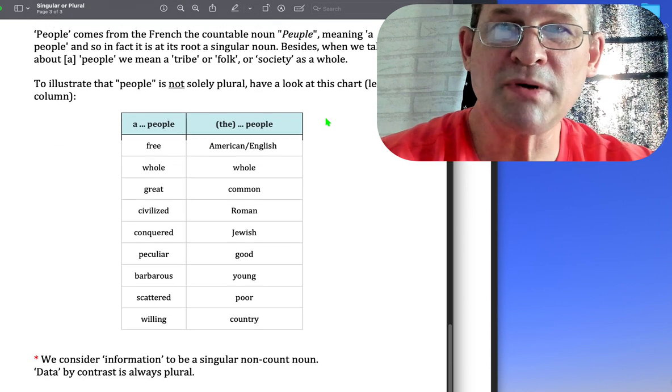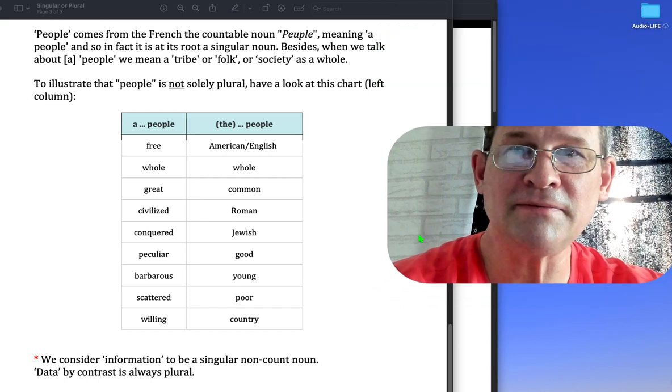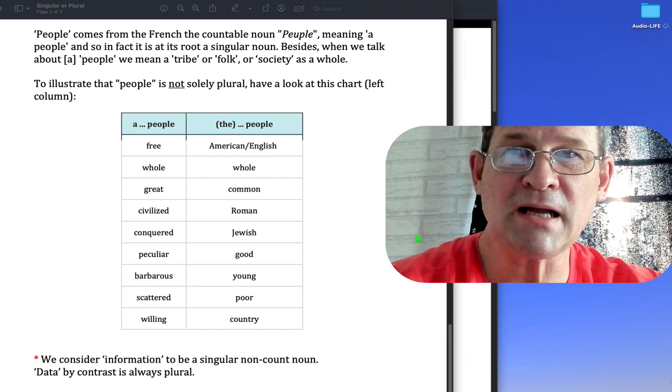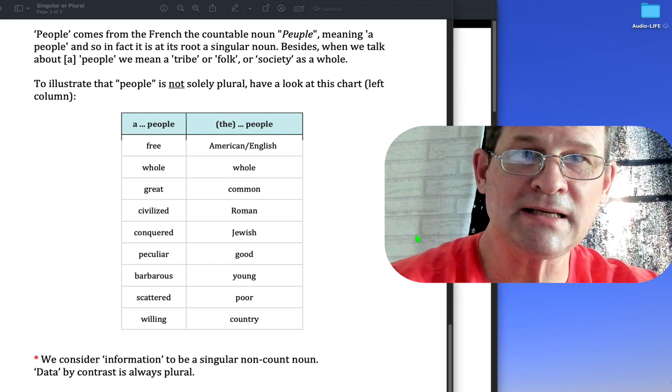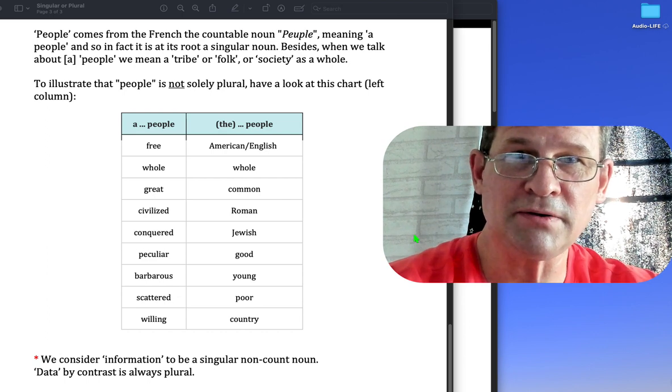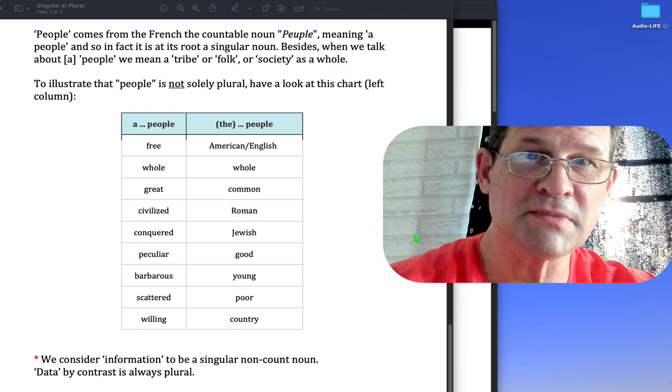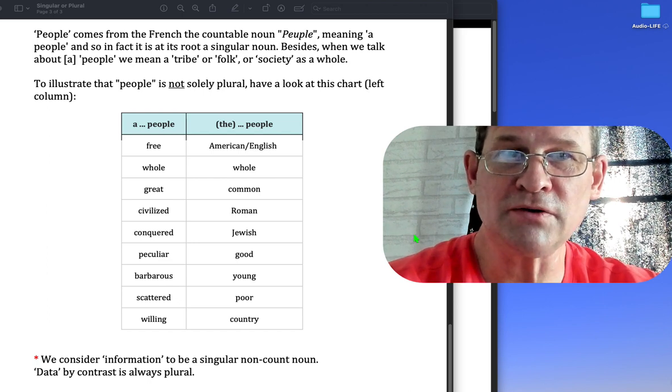People comes from the French countable noun meaning a people, and so in fact it is at its root a singular noun. Besides, when we talk about people or peoples, we mean a tribe, folk, society as a whole.